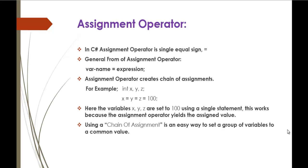If you are going to store a string value, the respective data type of that variable should also be string. The assignment operator can create a chain of assignments — for example, int x, y, z; x = y = z = 100. Here all three variables are set to 100 using a single statement. This works because the assignment operator yields the assigned value, making it easy to set a group of variables to a common value.